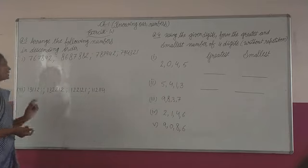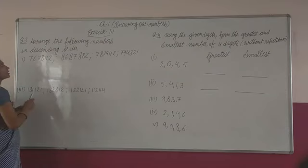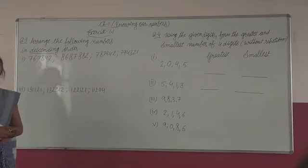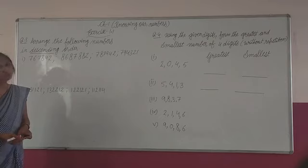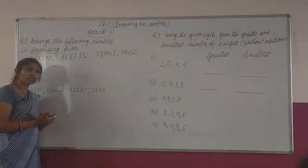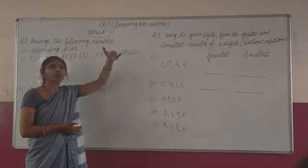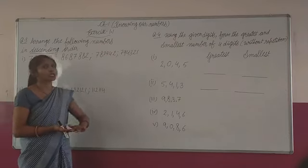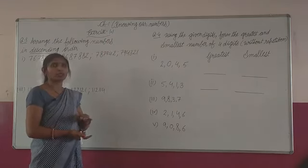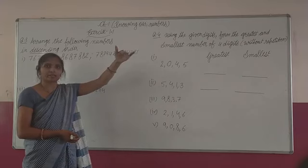Let us see what is question 3rd: 'Arrange the following numbers in descending order.' Descending order is the opposite of ascending order. Ascending order means smallest number, then greater, then greatest. In descending order, it is the opposite — we go from the greatest number to smaller, smaller, smallest. So greatest to smallest is descending, and smallest to greatest is ascending. Clear?